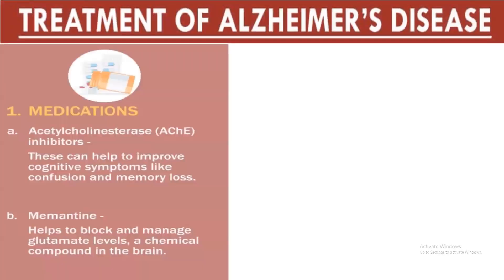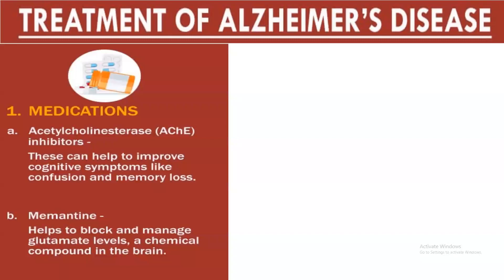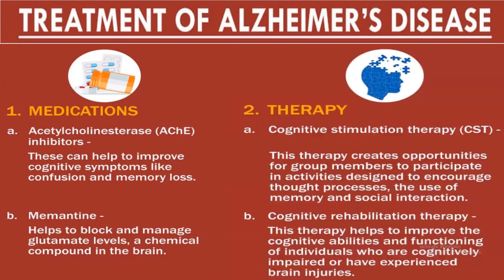Alzheimer's medications include acetylcholinesterase inhibitors (AChE inhibitors), which help improve cognitive symptoms like confusion and memory loss by inhibiting the enzyme that breaks down the acetylcholine neurotransmitter. Memantine helps block and manage glutamate levels in the brain. Therapies include cognitive stimulation therapy, which encourages thought processes, memory use, and social interaction, and cognitive rehabilitation therapy, which improves cognitive abilities in those with brain injuries.